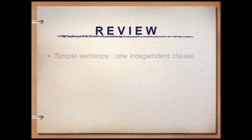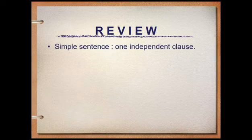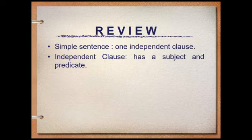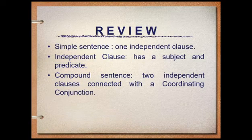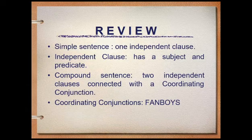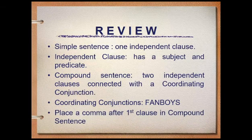Always remember: a simple sentence has one independent clause. An independent clause has a subject and predicate or complete predicate. A compound sentence has two independent clauses connected with a coordinating conjunction. Examples of coordinating conjunctions — remember FANBOYS: for, and, nor, but, or, yet, and so. And lastly, do not forget to place a comma after the first clause in your compound sentence.